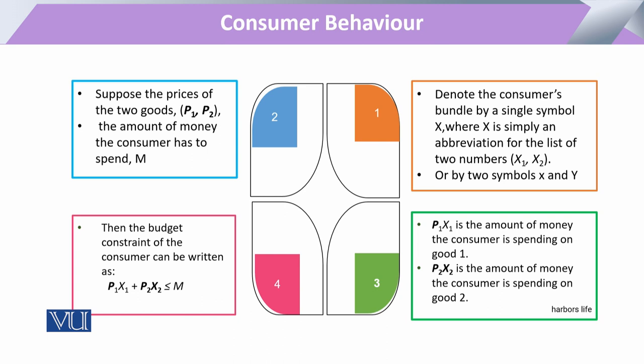जब हम इन दोनों को add up करेंगे, तो हमारे पास जो total बनेगा, वो बनेगा expenditure on both goods — so that can be on good one and good two. अब इन दोनों को जो हमने अलग-अलग symbols से किया, और इनके साथ अगर हम किसी और book में पढ़ेंगे, तो हो सकता है वहाँ x1 x2 न हों — कहीं y1 y2 हो, कहीं x और y हो। तो आपने इस notation से confused नहीं होना। These are just to identify certain bundles — उनको identify करने के लिए हम देते हैं। तो एक bundle x1 x2 भी हो सकता है, और एक bundle x और y की commodities भी हो सकती हैं।